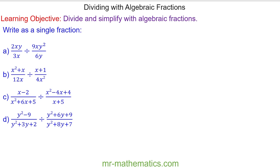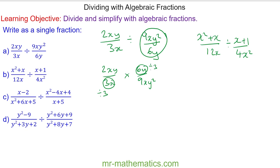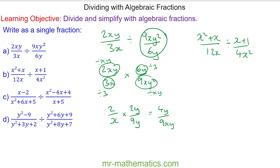Do you want to try these questions by pausing the video? For question 8a, we change the divide to times and find the reciprocal of the second fraction, which is 6y over 9xy squared. We simplify these two terms by dividing both by 3, and simplify the other two terms by dividing both by xy, giving us 4y over 9xy.